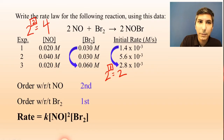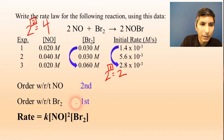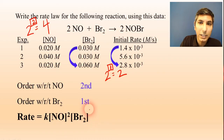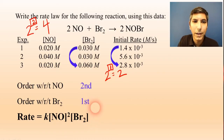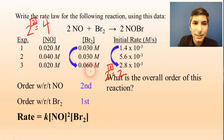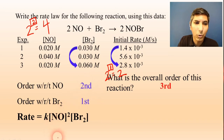That gives us the rate law: rate = k[NO]²[Br₂]. We write the exponent of two for NO since it's second order, and we don't need to write an exponent for Br₂ since it's first order. The overall order is the sum of the individual orders: two plus one is third order.